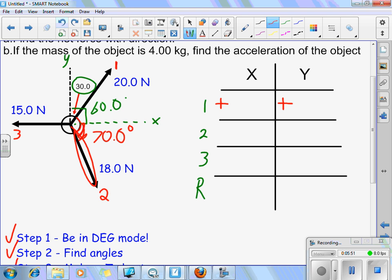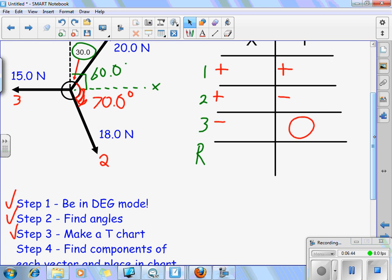For vector number two, it's pointing southeast or down and to the right. East or to the right for x is positive. Down or to the south is negative for y. So we have a negative sign for our y part. Lastly, vector number three is just pointing to the west. It looks flat, and honestly, I'm just going to assume it is perfectly flat. Which means that for x, it's negative because it's going to the left or to the west. For y, there is nothing because it's just horizontal. There is no vertical component. So we already know the y value is zero for that one.